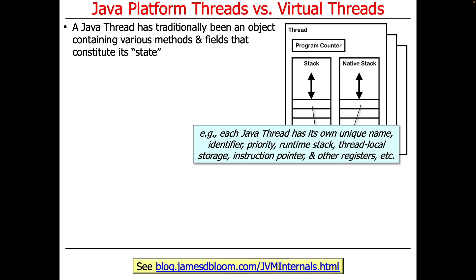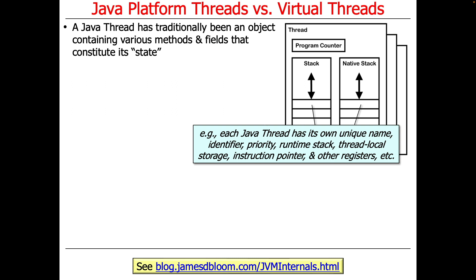Traditionally, a Java thread was an object that contained various methods and fields that constituted its state. A thread has state like a name, an identifier, a priority, a runtime stack, thread local storage, an instruction pointer, and other registers needed by the underlying operating system and hardware to execute the computations in the thread. So that's what it's classically had.